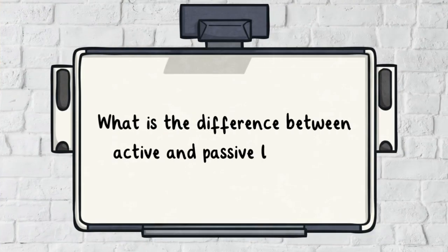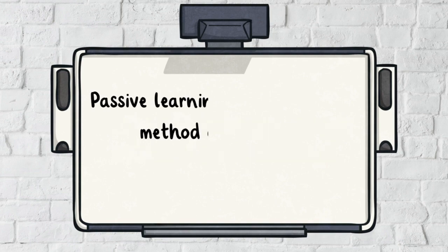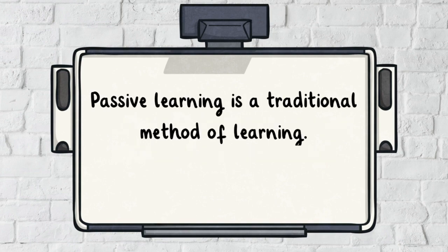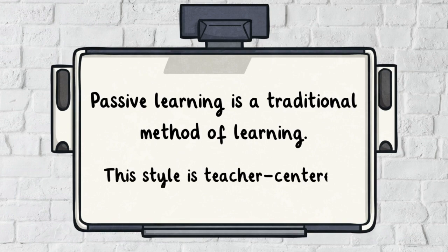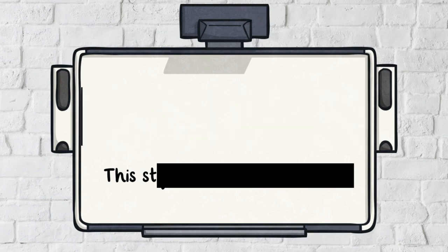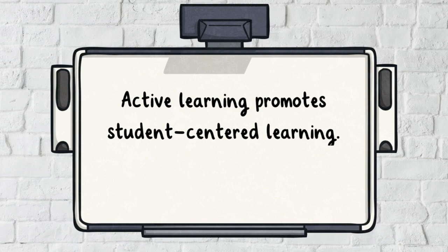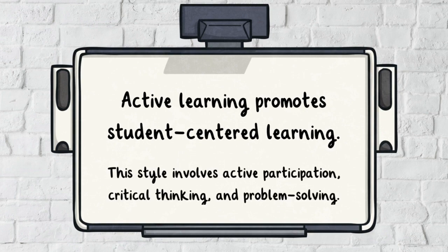What is the difference between active and passive learning? Passive learning is a traditional method of learning. This style is teacher-centered, where students learn by listening and watching the content being presented to them. On the other hand, active learning promotes student-centered learning, involving active participation, critical thinking, and problem solving.